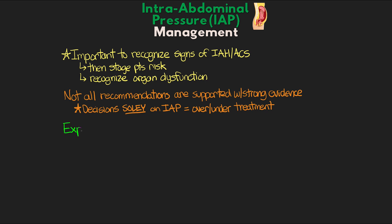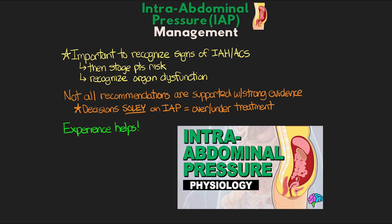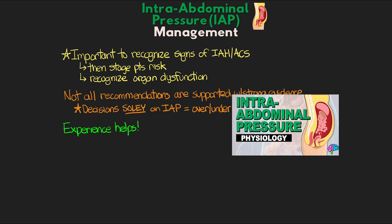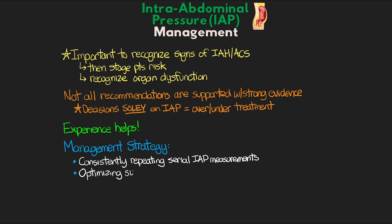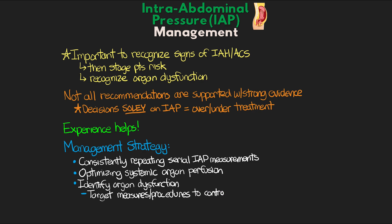Having experience with intra-abdominal pressure management and recognition of organ dysfunction are going to go a long way in treating these patients. I'll link to the previous lesson where I reviewed the pathophysiology of elevated intra-abdominal pressure. Our management strategy revolves primarily around four main principles: consistently repeating serial intra-abdominal pressure measurements, optimizing the systemic organ perfusion, identifying potential organ dysfunction, and targeting specific measures or procedures to control intra-abdominal pressure and minimize potential damage to targeted organs, and quick surgical decompression when warranted.